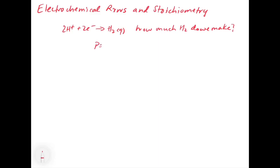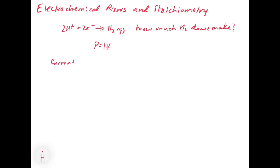The power of any cell is equal to I times V. The V tells us the driving force for the electron to move, and I tells us how many electrons are actually moving. The current, which gets the symbol I, has units of amperes or amps and is a measurement of charge Q divided by time T.